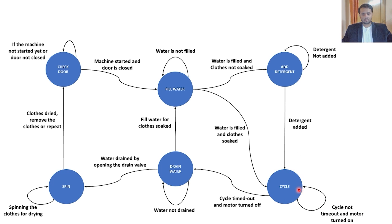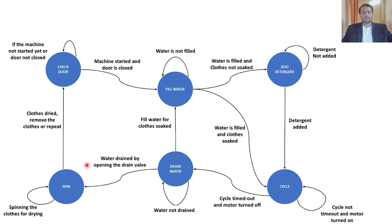The cycle state is basically where the drum of the washing machine rotates using a motor and the clothes are washed. We then drain the dirty water out. If the clothes were soaked in soap previously, we give them a water wash again by filling the water — without adding detergent this time — and going directly to the cycle state. We again drain the dirty water and then go to the spin state, which is for drying the clothes.